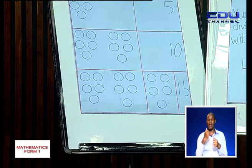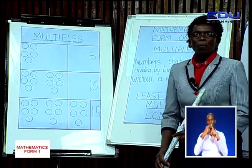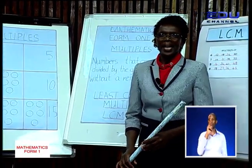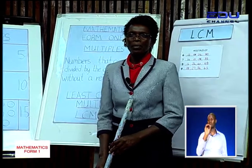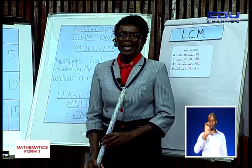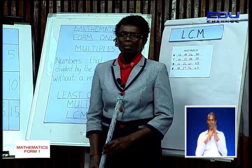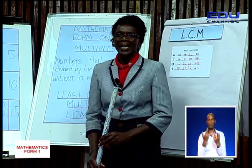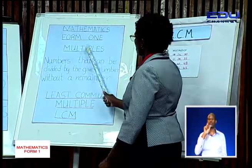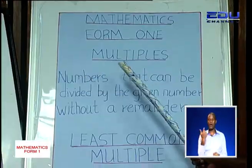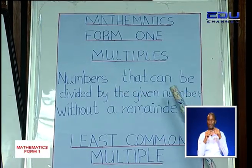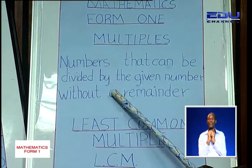There are many other multiples of 5. We can have 20, 25, 30 — all of these are referred to as multiples of 5. Now, what is a multiple? How can we define a multiple? A multiple is a number that can be divided by the given number without a remainder.